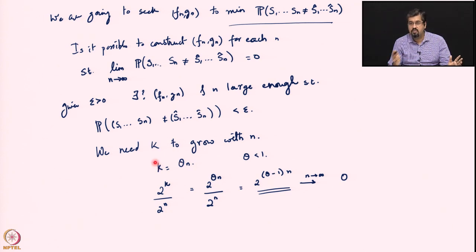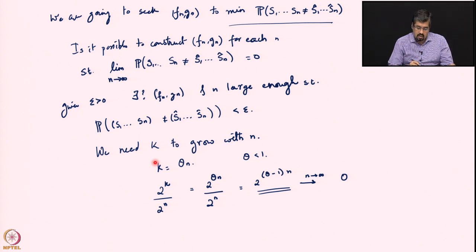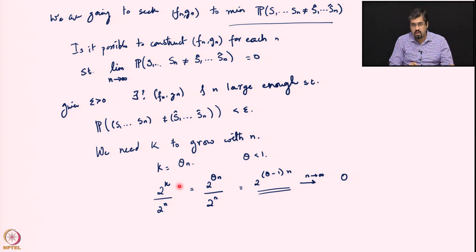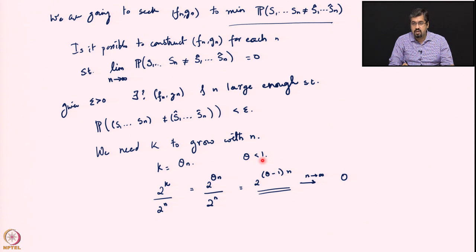We were always in the regime where k is less than n. So k has to grow with n but remain less than n. We posit that k is some θ times n — some fraction θ times n — where θ itself is less than 1. The fraction 2^k / 2^n, as n tends to infinity, goes to 0 because θ is less than 1.